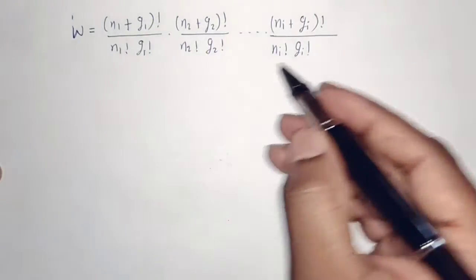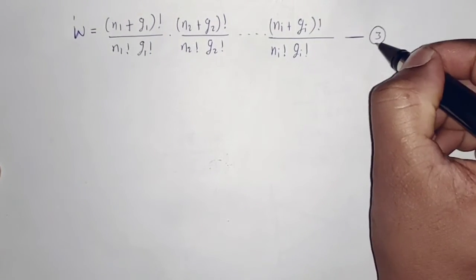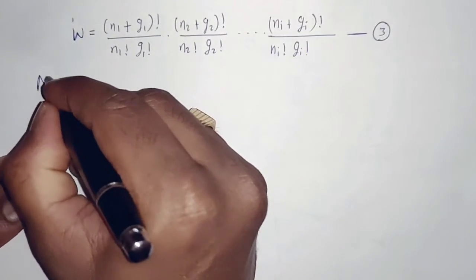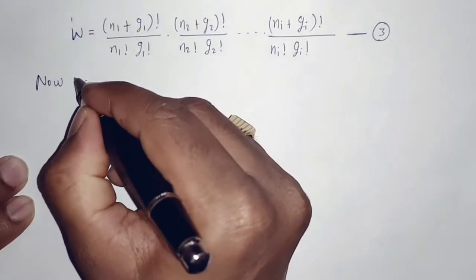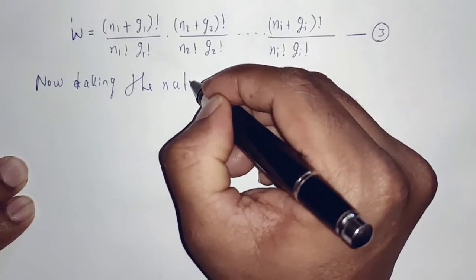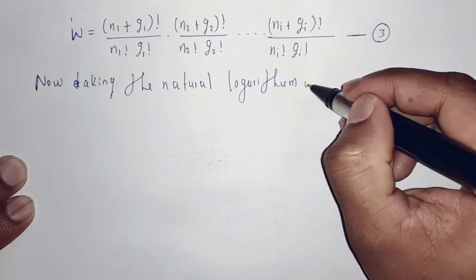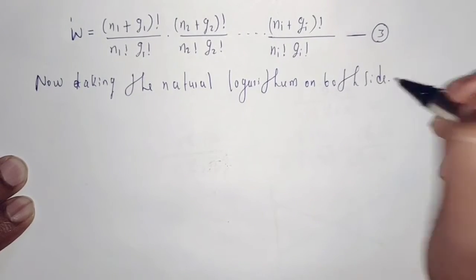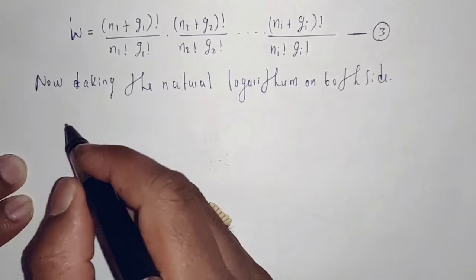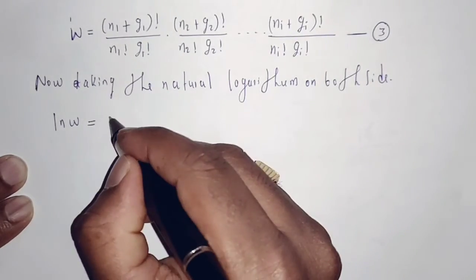We derived this expression in the last video and I am going to denote this equation by 3. Now I am going to apply natural logarithm on both sides of the Bose-Einstein expression. Taking the natural logarithm on both sides, we get ln(W) equal to ln of the expression.